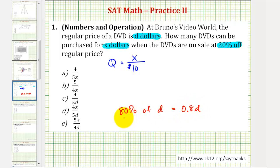Again, if we want to find eighty percent of a number, we convert the percent to a decimal and then multiply, which means we can replace ten dollars with zero point eight D.